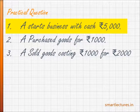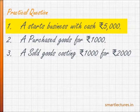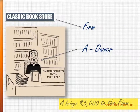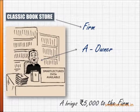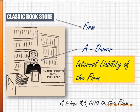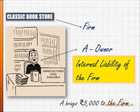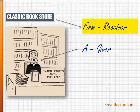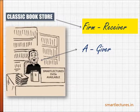Let's go back to the first transaction: A starts business with cash, rupees 5,000. Technically speaking, when A starts business, it means A brings rupees 5,000 and gives cash to the firm — Classic Bookstore. This rupees 5,000 will become the liability of the firm, called internal liability, meaning liability towards the owner.